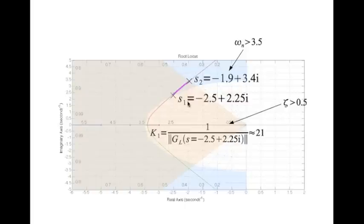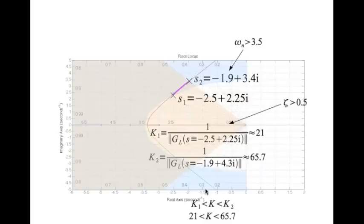And for each of these you can find K value. K1, corresponding to this pole, is given by 1 divided by the magnitude of GL at s equal to minus 2.5 plus 2.25i. I used MATLAB to do this, and you'll find that K1 is nearly 21. And K2 is given by 1 divided by magnitude of GL of s at s equal to this closed loop pole, which is nearly equal to 65.7. So K has to lie between 21 and 65.7.